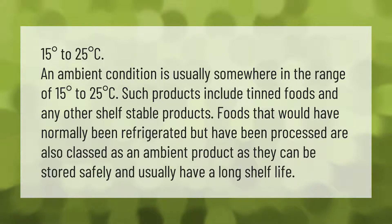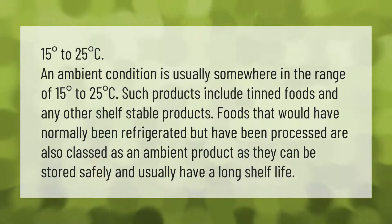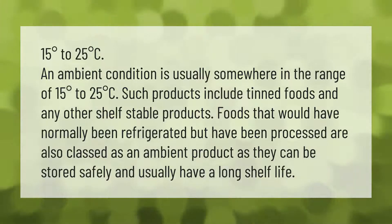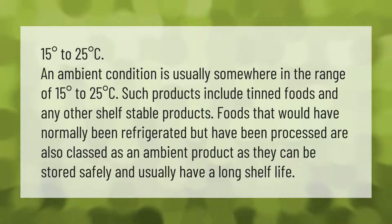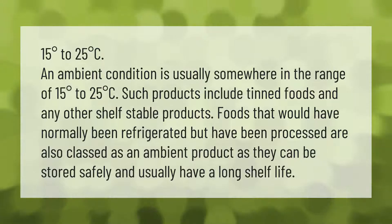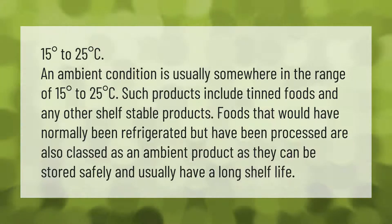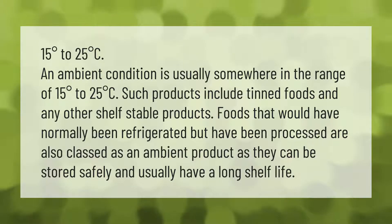An ambient condition is usually somewhere in the range of 15 degrees to 25 degrees Celsius. Such products include tinned foods and any other shelf-stable products. Foods that would have normally been refrigerated but have been processed are also classed as an ambient product, as they can be stored safely and usually have a long shelf life.